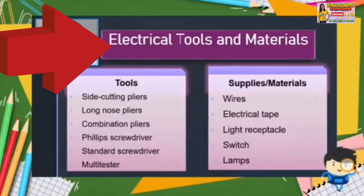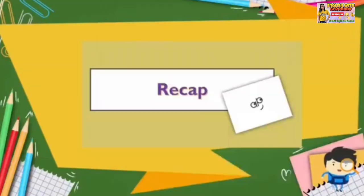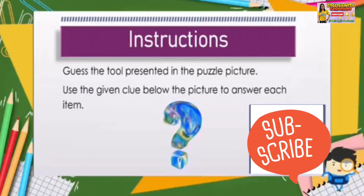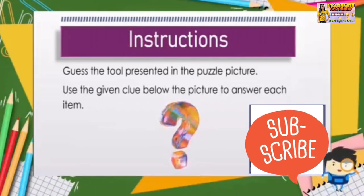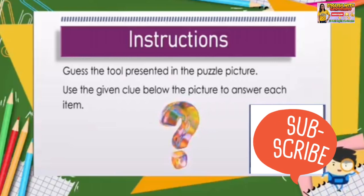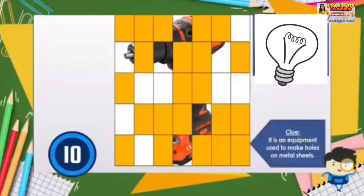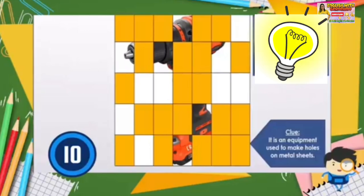Lesson 2 will focus on the different electrical materials essential in EIM. You have to guess the tool presented in the puzzle picture using the given clues below the picture. First item — the clue is: it is an equipment used to make holes on metal sheets. So, what is this tool?